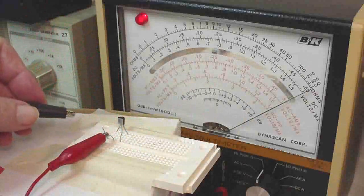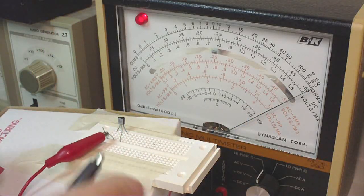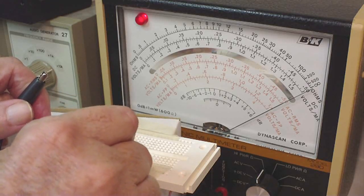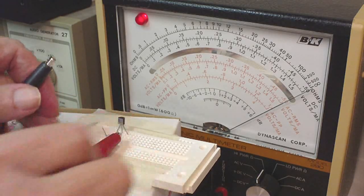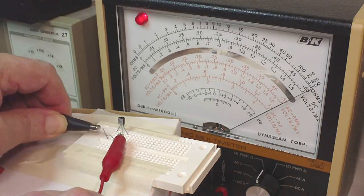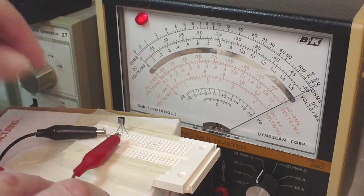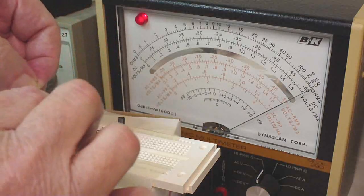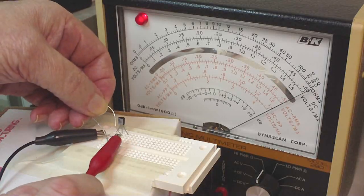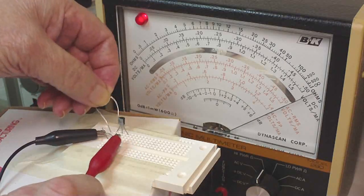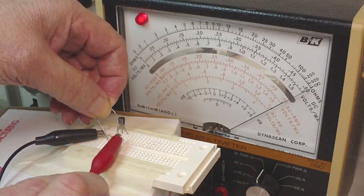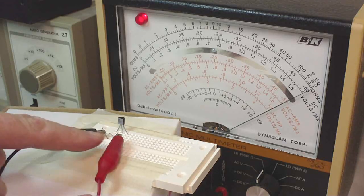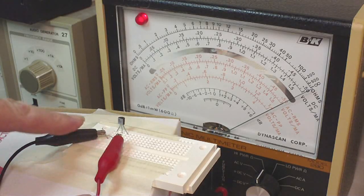And again, we got a 50-50 chance of which is positive. Well, we'll call this one again C. And we'll bias the base again with that 100K ohm resistor. Well, looks like we got it the first time here. So that means that this is C, B, and E.